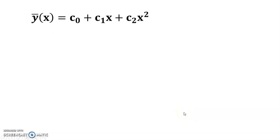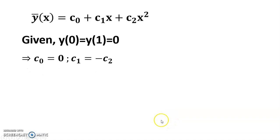y bar is equal to c zero plus c one x plus c two x square. Given y(0) equals to y(1) equals to zero, so I get c zero equals to zero and c one equals to minus c two.